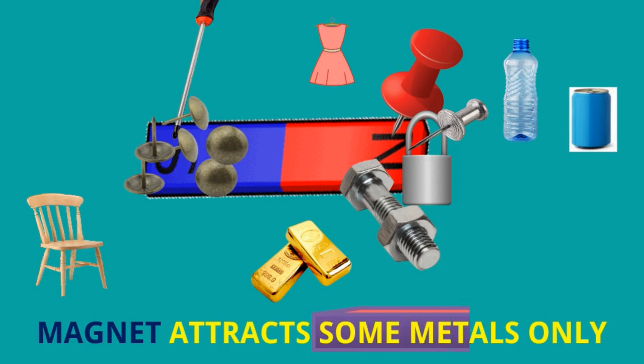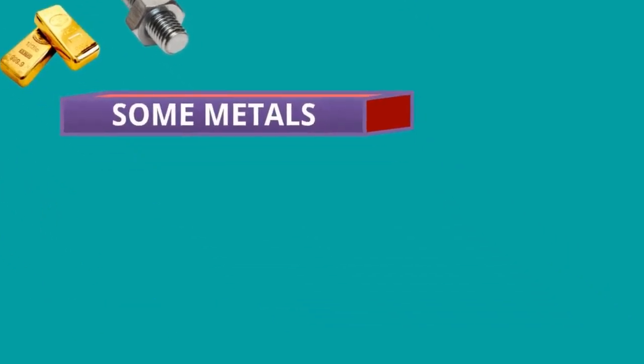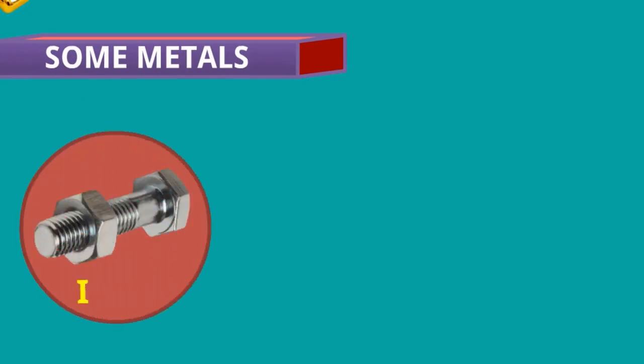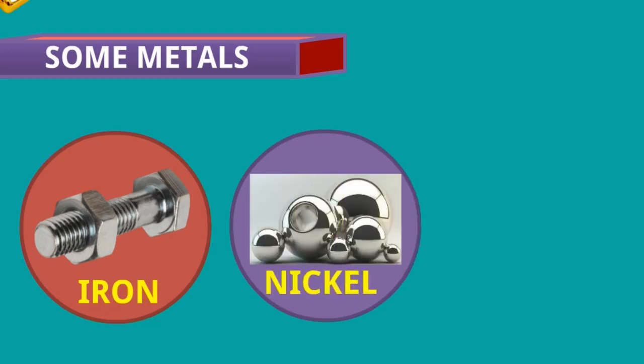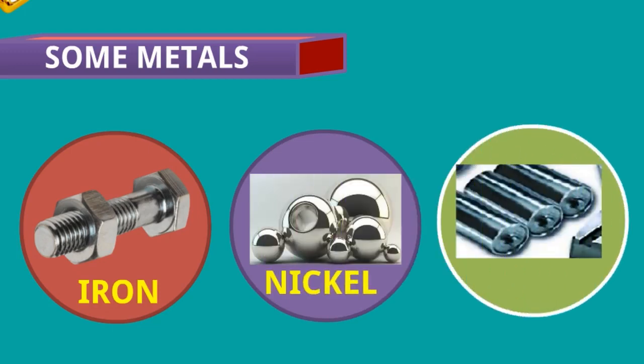Now what does it mean by some metals? Some metal means the object which is made of iron, object which is made of nickel, the object which is made of cobalt. These all are mainly attracted by magnet.